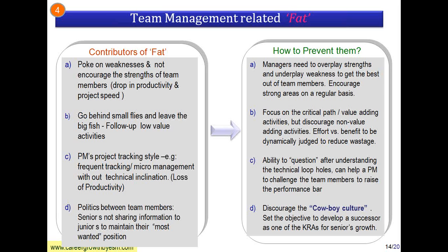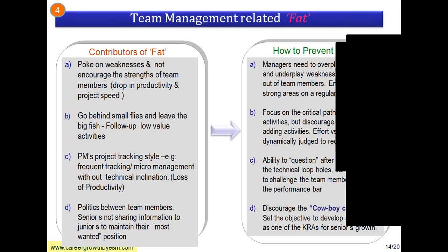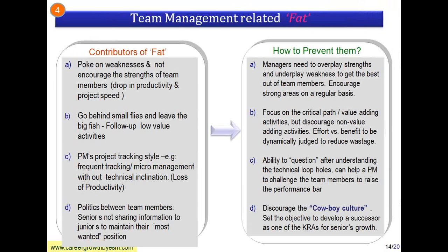Underplay the weakness. If you always poke on weaknesses, the person may not give 100%. Another issue is going behind small flies and leaving the big fish. When you have a huge project plan, go behind the critical tasks — the weak tasks that can actually affect the overall project duration. Don't focus on trivial things like why the bus is not coming. Focus on critical tasks that affect the timeline. Don't follow up on low-value activities; recognize high-value activities and follow up on those. Leave low-value activities in autopilot mode.